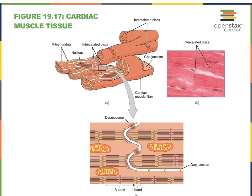So just like skeletal muscle tissue, heart muscle tissue or cardiac muscle tissue is also striated. If you look here at the arrangement of the thick and thin filaments you can clearly see the A bands and the lighter I bands creating the striations. We also see mitochondria, which we see in skeletal muscle fibers as well.